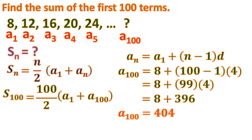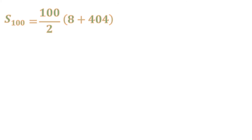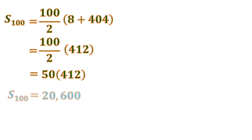Now we can continue finding the sum of the first 100 terms. We substitute: the first term is 8 and the last term is 404. So 404 plus 8 is 412, and 100 divided by 2 is 50. Then 50 times 412 is 20,600. And that is the sum of the first 100 terms of that sequence.